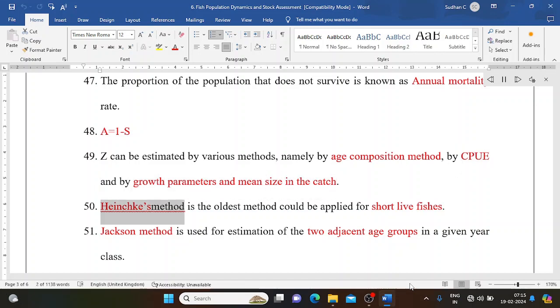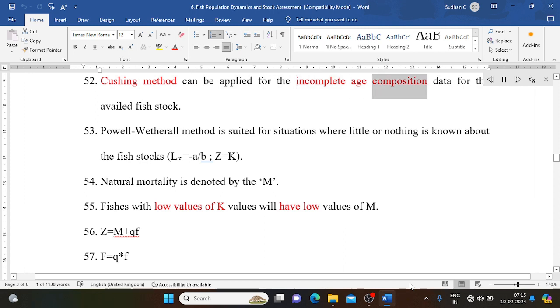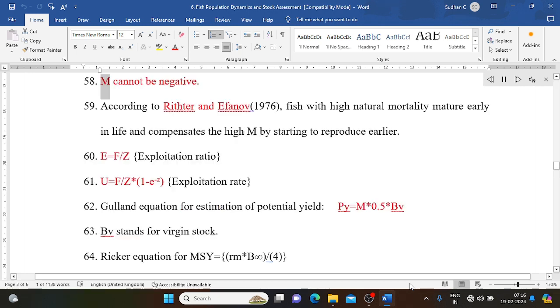Heincke's method is the oldest method, could be applied for short-lived fishes. Jackson method is used for estimation of Z for two adjacent age groups in a given year class. Cushing method can be applied for the incomplete age composition data for the available fish stock. Powell-Wetherall method is suited for situations where little or nothing is known about the fish stocks. L infinity equals a/b, Z equals K. Natural mortality is denoted by M. Fishes with low values of K will have low values of M. Z equals M plus qF. F equals q times f. M cannot be negative.